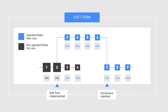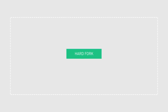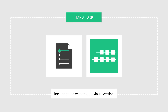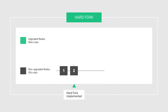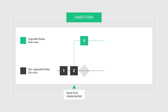A hard fork is a change in a cryptocurrency protocol which is incompatible with the previous versions, meaning that nodes that don't update to the new version won't be able to process transactions or push new blocks to the blockchain.